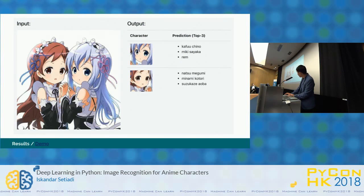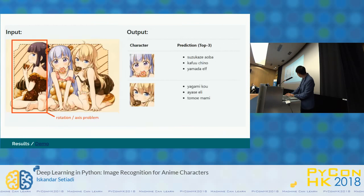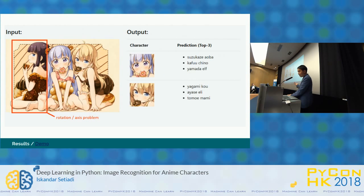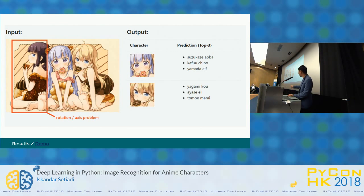Now talking about the problems. After doing several experiments, you know that at some point it has issues — for example, when the face is not properly aligned, you cannot detect the face and cannot identify which character it is. That's one of the challenges of image recognition: not all the data behaves as expected. Sometimes it has rotation or axis problems.